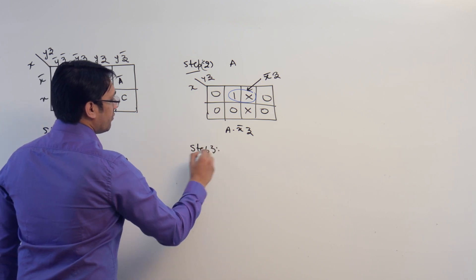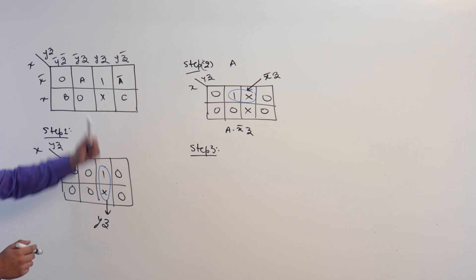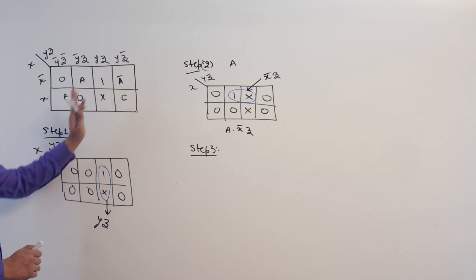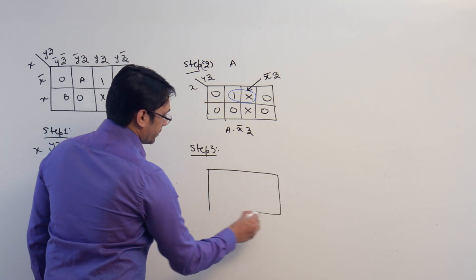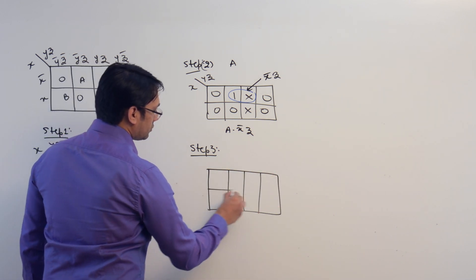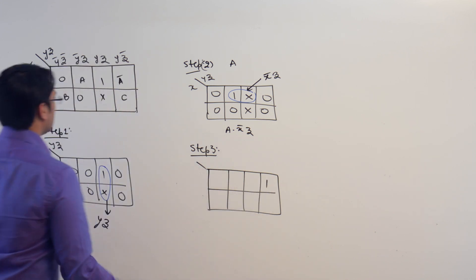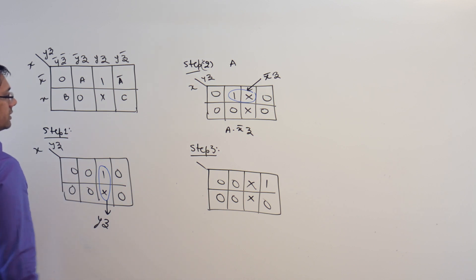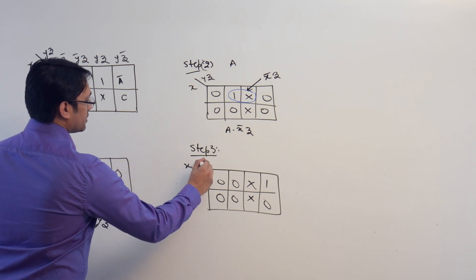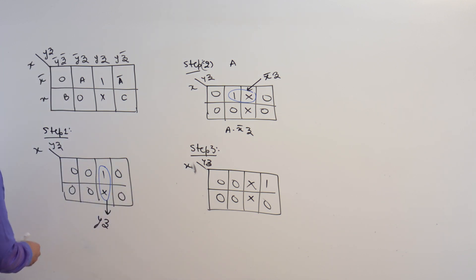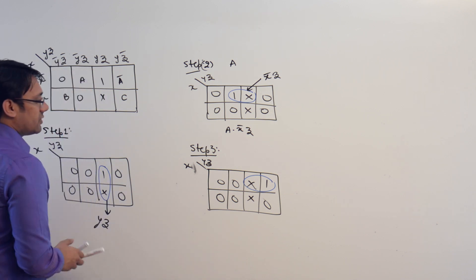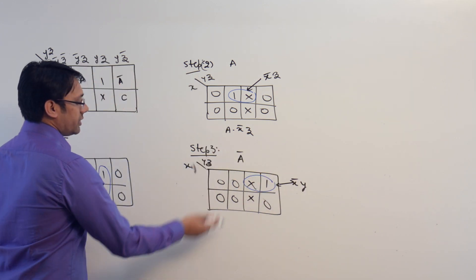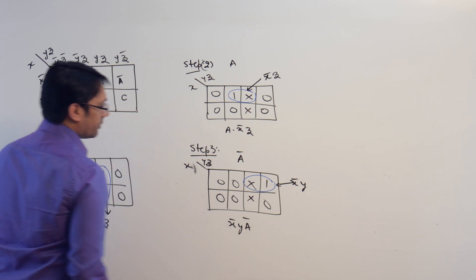Next, take another variable — a complement. Keep a complement as one, keep every other variable as zero, and keep ones as don't care. So we keep a complement as one, keep a, b, and c as zero, and set don't care, don't care, zero, and zero for the remaining cells. In axes x, yz, we can make a subcube representing x complement and y. Since we created this for a complement, the expression is x complement y a complement.